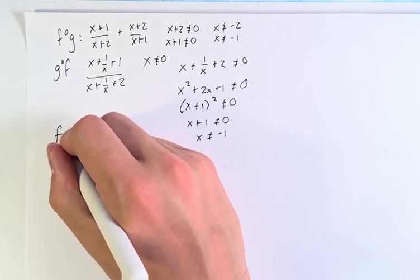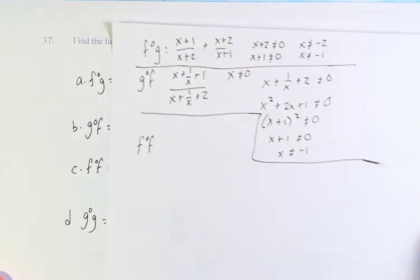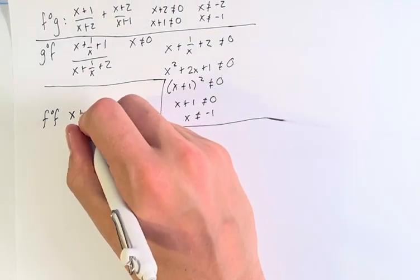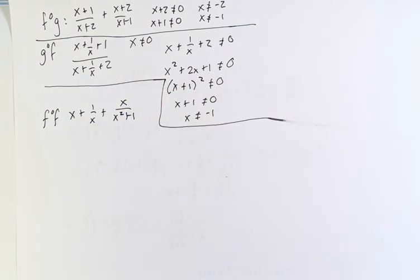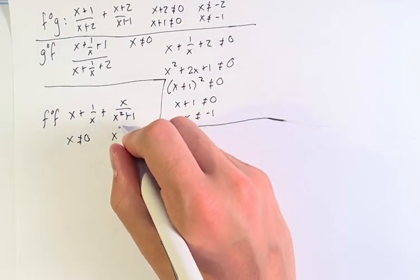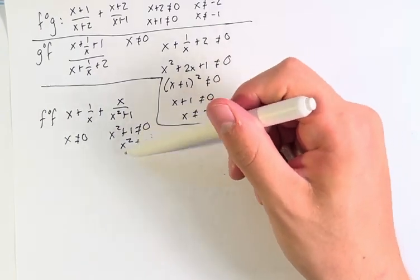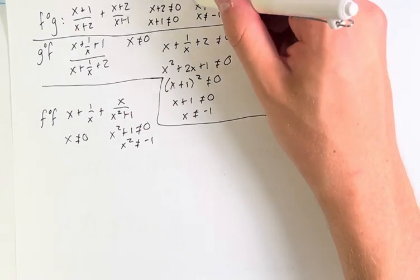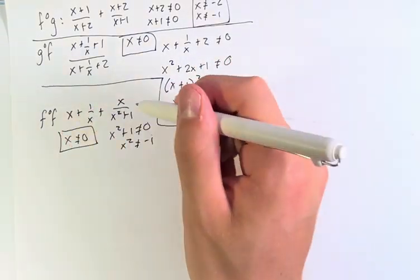Next, for f of f, we had x plus 1 over x plus x over (x squared plus 1). We have two fractions, so their denominators cannot equal zero. Therefore x cannot equal zero, and x squared plus 1 cannot equal zero — meaning x squared cannot equal negative 1, which is true for no real x. Therefore, the only restriction is that x cannot equal zero.